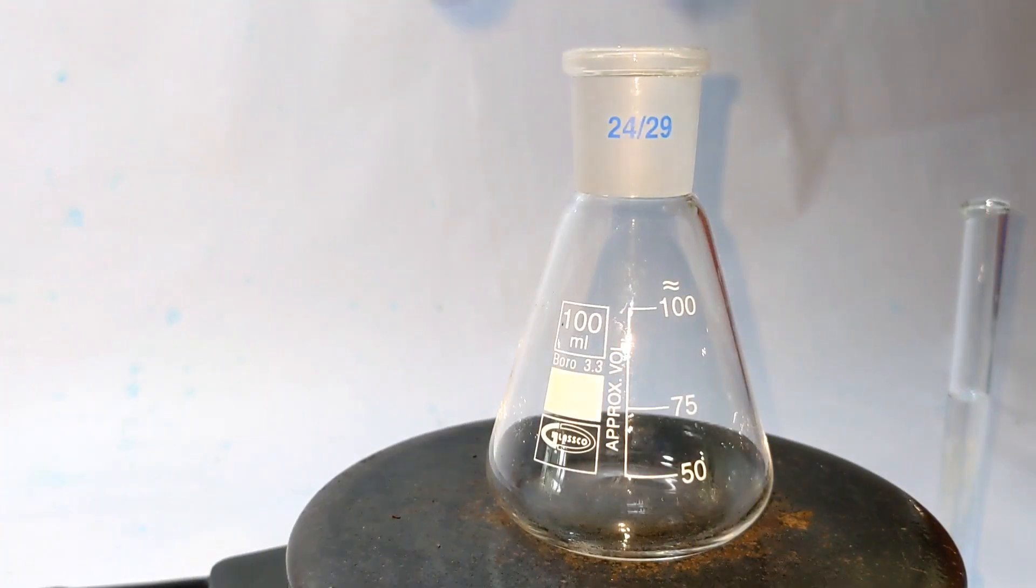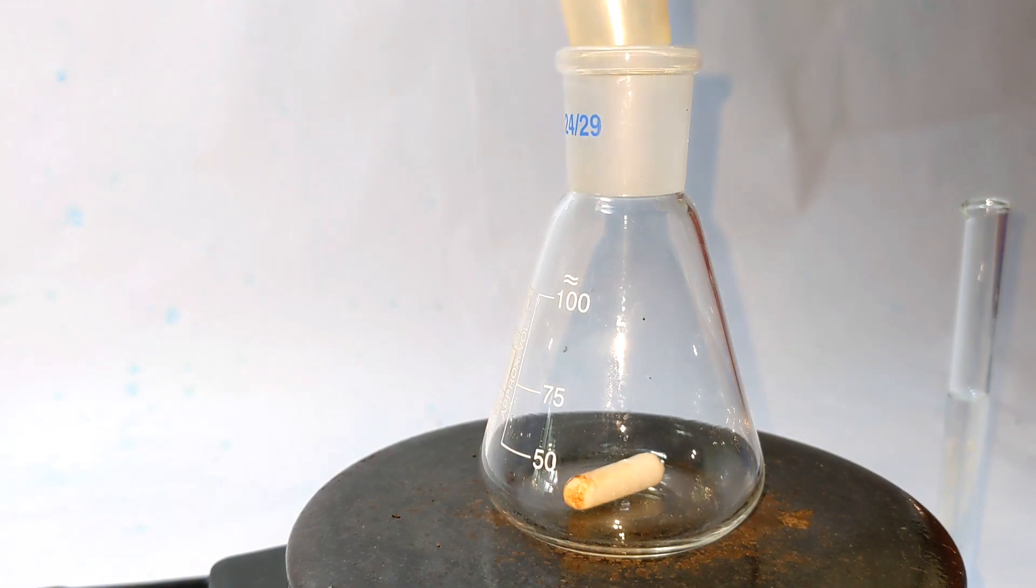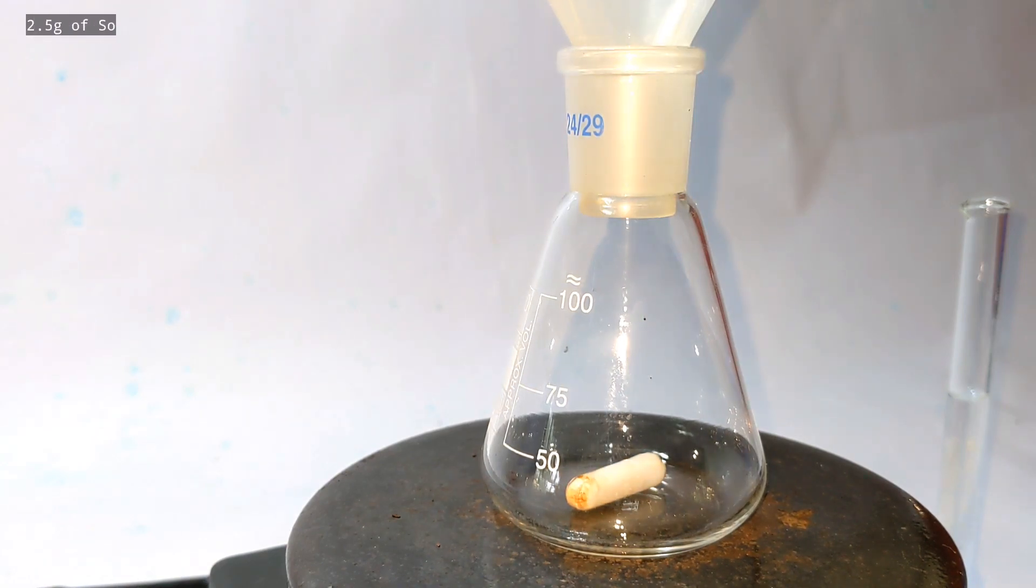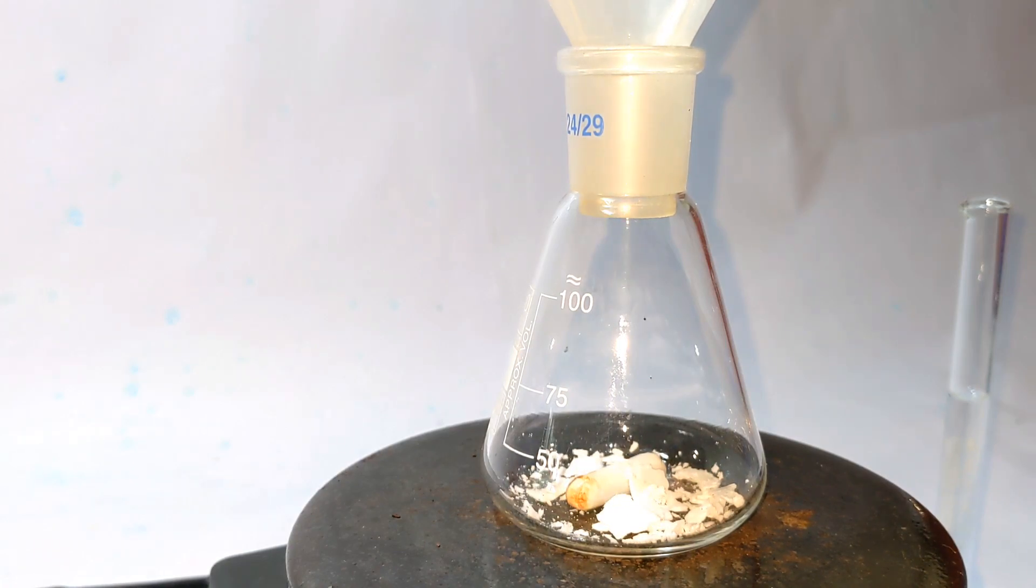Place a 100 milliliter Erlenmeyer flask on a stirrer with the magnetic stirring bar inside. Now 2.5 grams of sodium molybdate was transferred using a powder funnel. Sodium molybdate was made by the reaction of molybdic acid with sodium hydroxide.